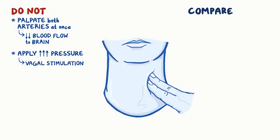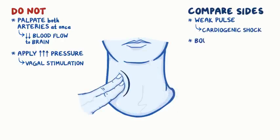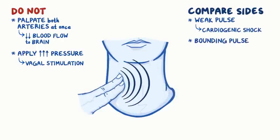Compare the two sides. A weak pulse might indicate cardiogenic shock. A bounding pulse might indicate aortic regurgitation. Now let's take Fred's apical pulse. We would take an apical pulse when the radial pulse seems irregular, or because Fred's condition requires a more accurate assessment.